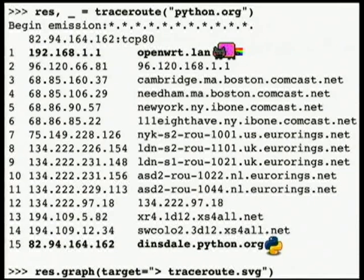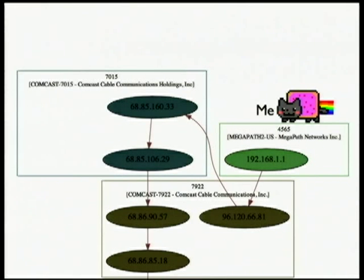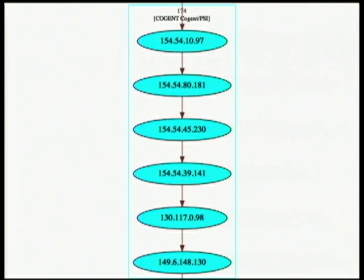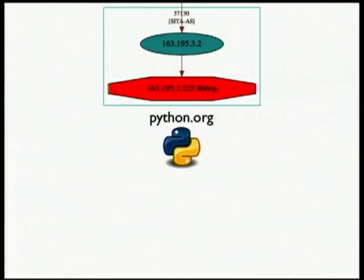Another cool thing you can do with Scapy is visualize this path through the Internet. I generated a graph from this data. There's me at the top and Python at the bottom. Each circle is a distinct IP address, and they're grouped into colors — each color is a different company managing the IP addresses and physical hardware behind those hops. There are many companies working together to get my packets from Boston to python.org. I talk to Comcast, then Cogent, then IES, hop by hop, IP address by IP address, until I finally get to the provider of python.org.